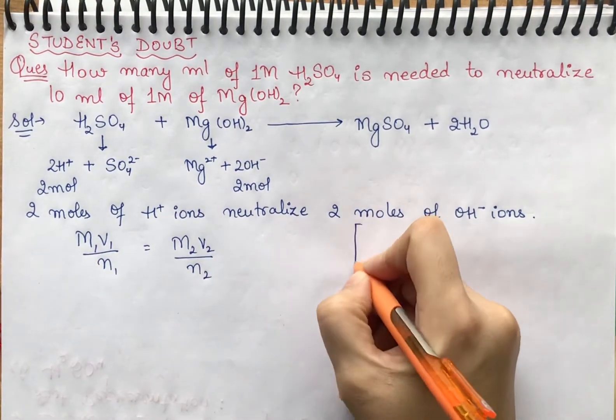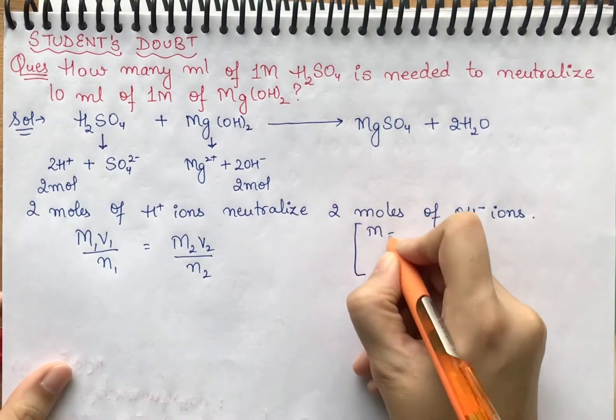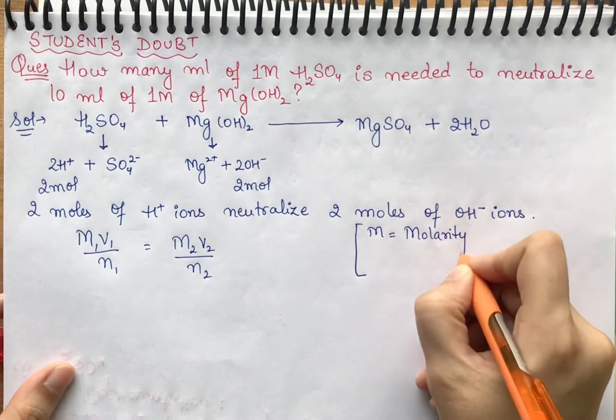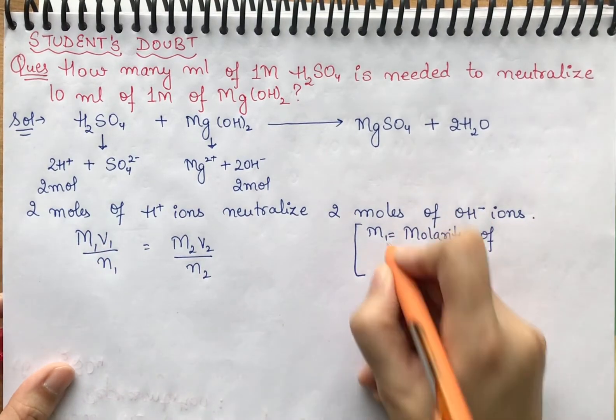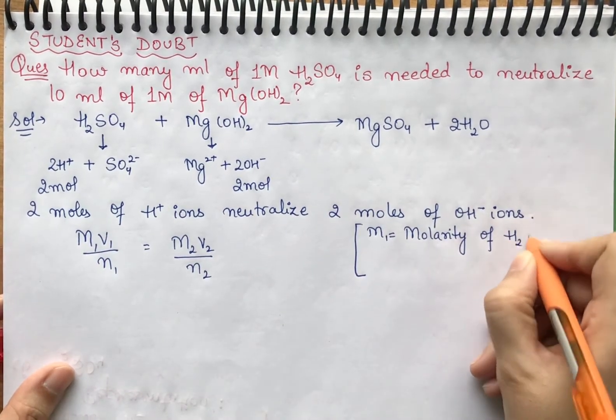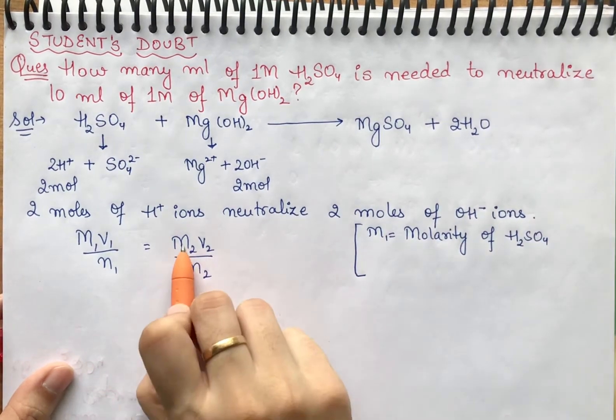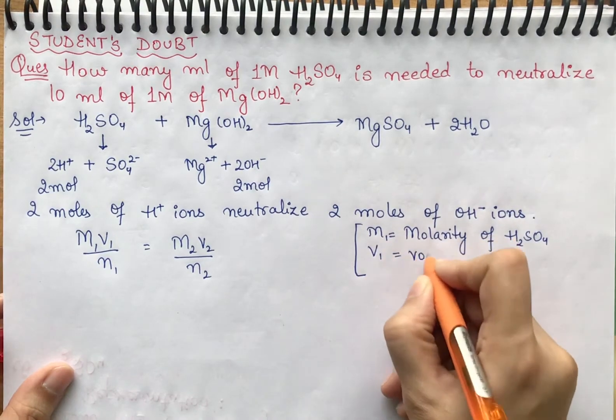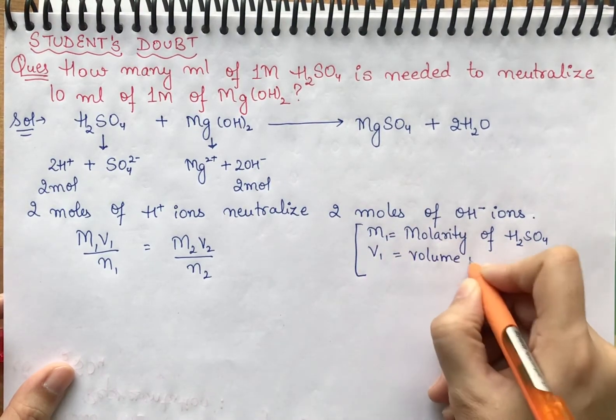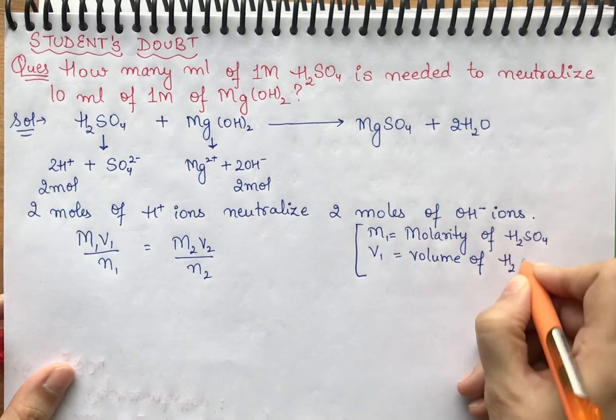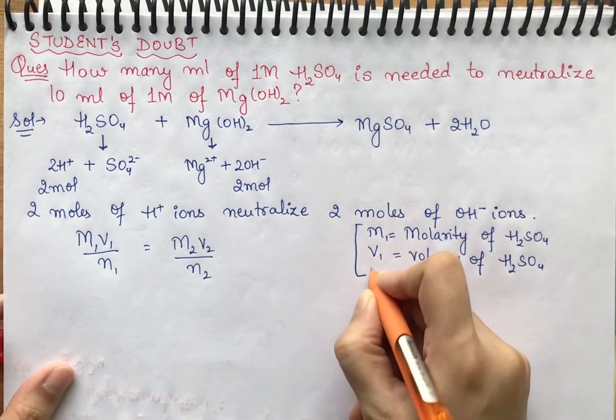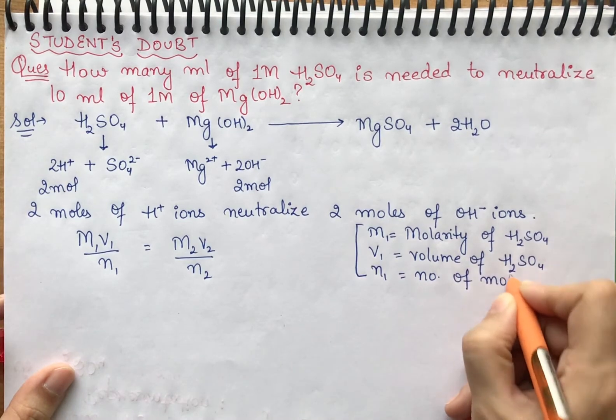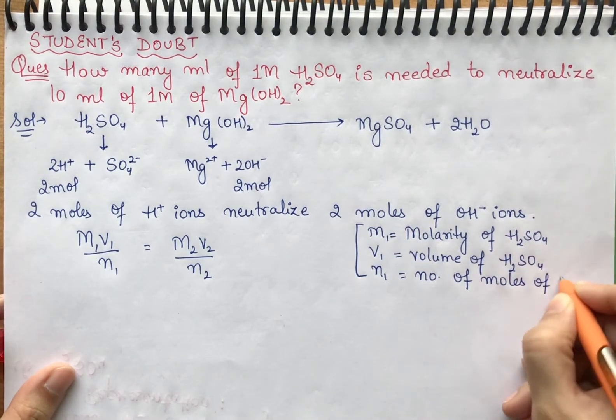What is M here? M is the molarity of that solution. M1 is the molarity of H2SO4, M2 is the molarity of Mg(OH)2. V1 is the volume of H2SO4, and N1 is the number of moles of H+ ions from H2SO4.